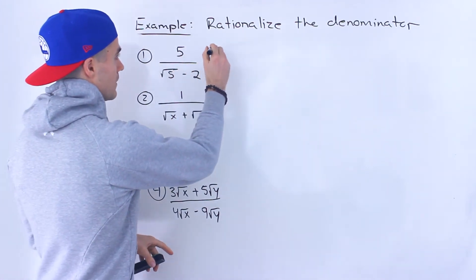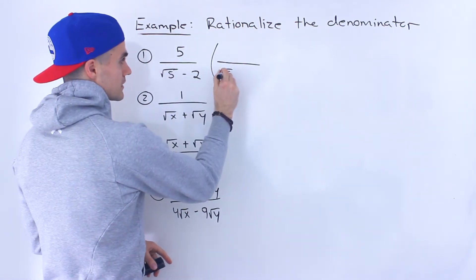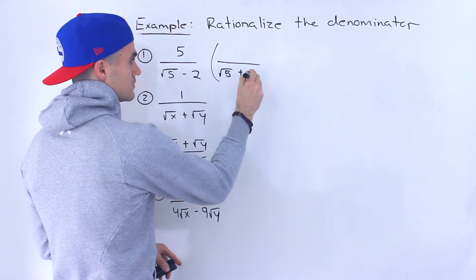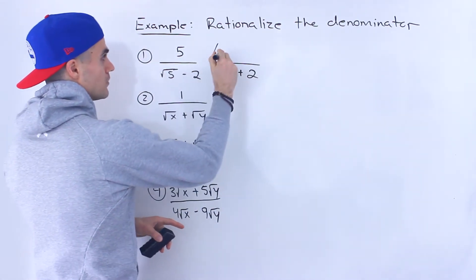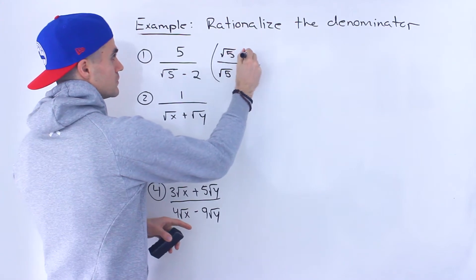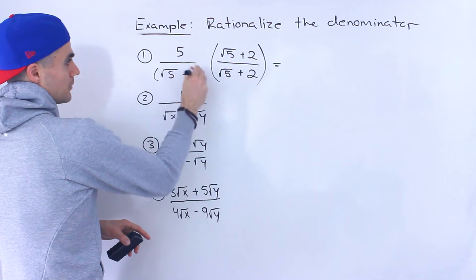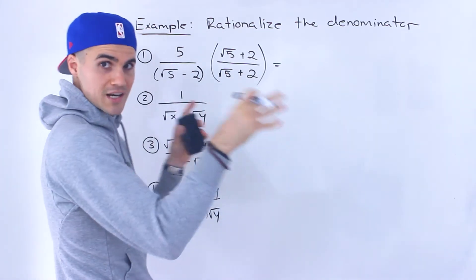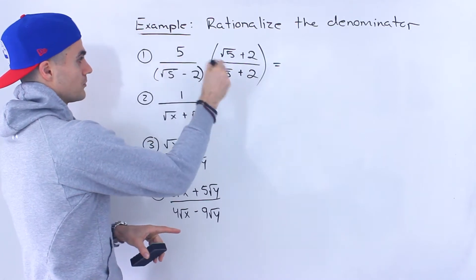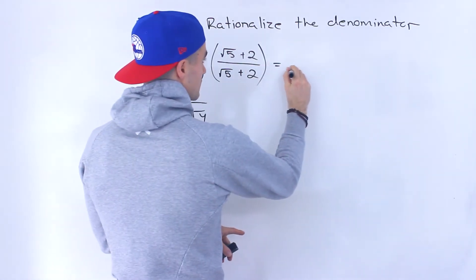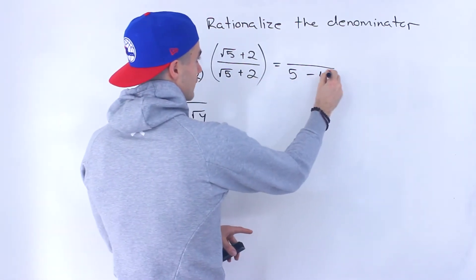To do that here, what we got to do is multiply that denominator by its conjugate. So it's basically going to be root five plus two — we just change that sign in the middle — but what we do to the bottom we also have to do to the top. When you multiply by the conjugate it's going to be just a difference of squares. Those middle terms are going to cancel out so you just multiply the end terms. Root five times root five gives us five, and then negative two times positive two gives us negative four.